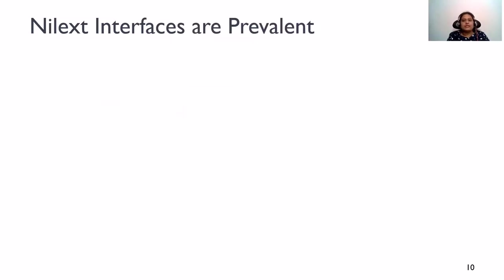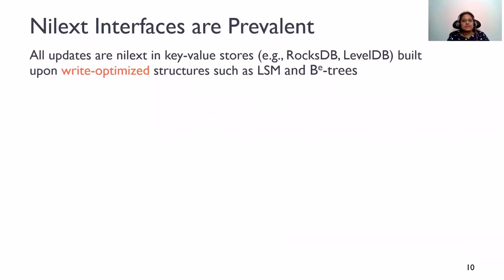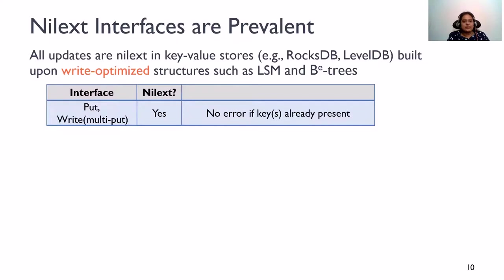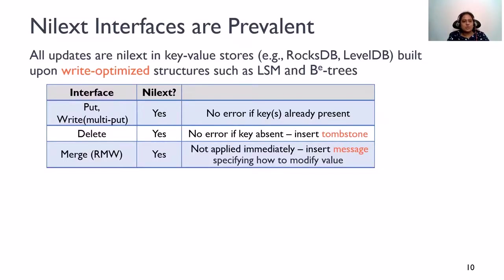So, are these nilext interfaces practical? It turns out that nilext interfaces are not just practical, they are also prevalent. First, almost all updates are nilext in popular write-optimized stores like RocksDB and LevelDB. Let's take a closer look at the interfaces. As I told you earlier, put is nilext and so is multi-put. Even deletes are nilext because a delete is not returned an error if the key being deleted is absent. Rather, just a tombstone message is inserted and the operation is acknowledged. Surprisingly, even read-modify-writes are also nilext in these systems. A read-modify-write is implemented using something called a merge operator. And this merge operation is not executed immediately. Rather, a message is inserted that specifies how to modify the value associated with the key. So, as you can see, all updates are nilext in these stores.